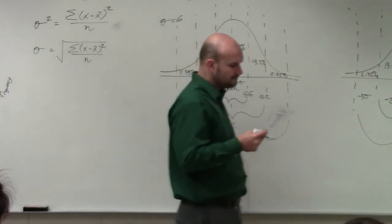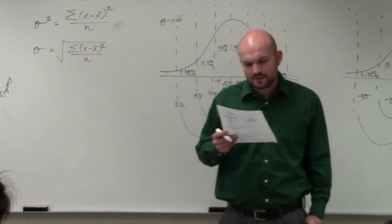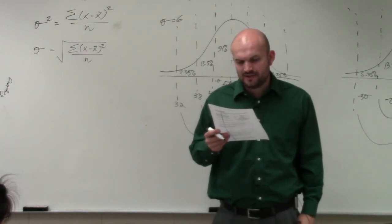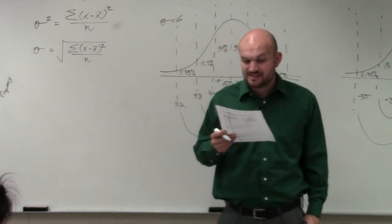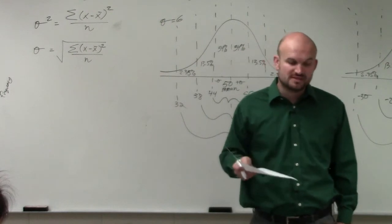So number 20. It says find the probability that a value selected at random is in the given interval at most 56.